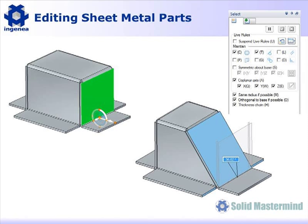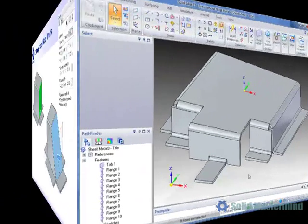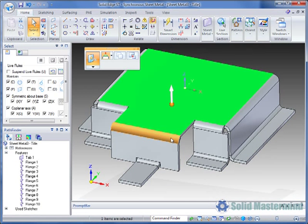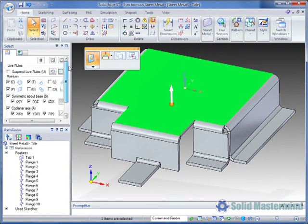In order to edit sheet metal tabs or flanges, we can use the Synchronous tools such as Relate or the steering wheel to perform move or rotate functions. Let's return to our model and take a look at a few examples using the steering wheel. When selecting a face, the simplified steering wheel appears along with the Live Rules panel. For now we'll suspend all Live Rules.